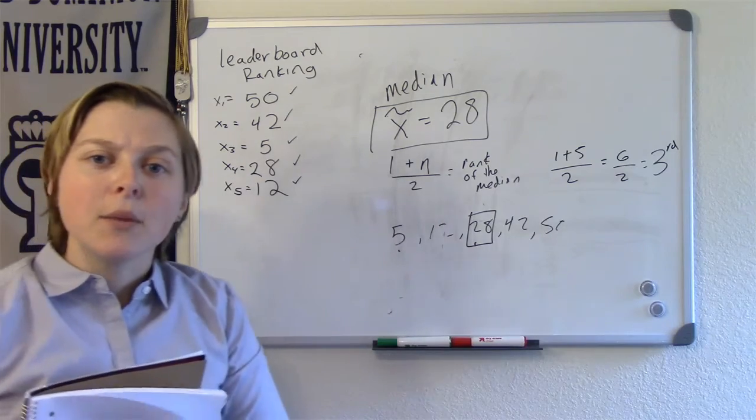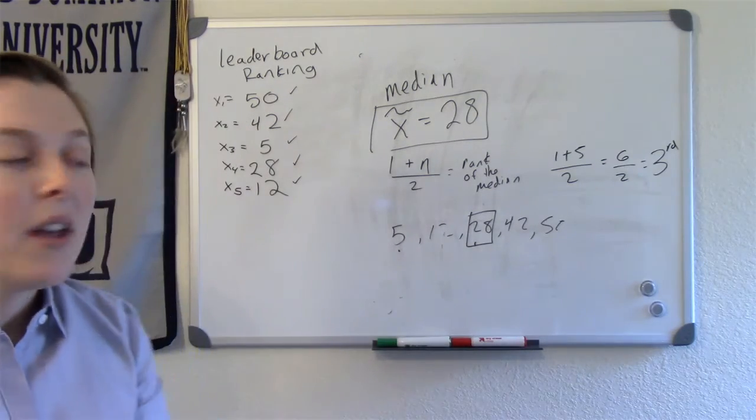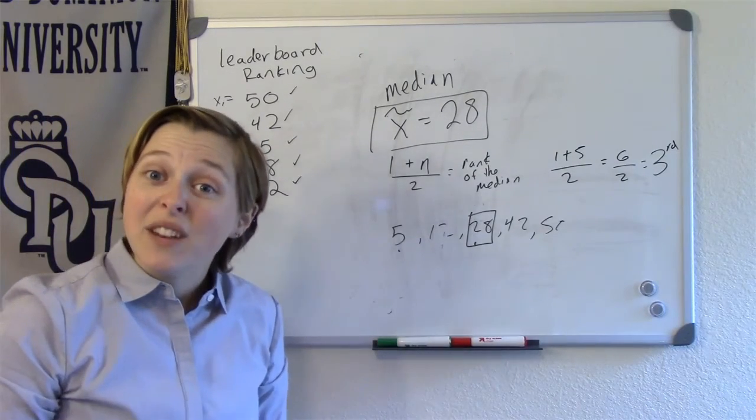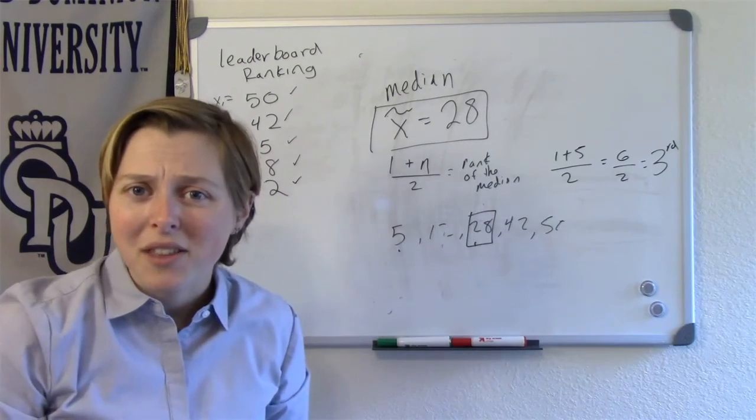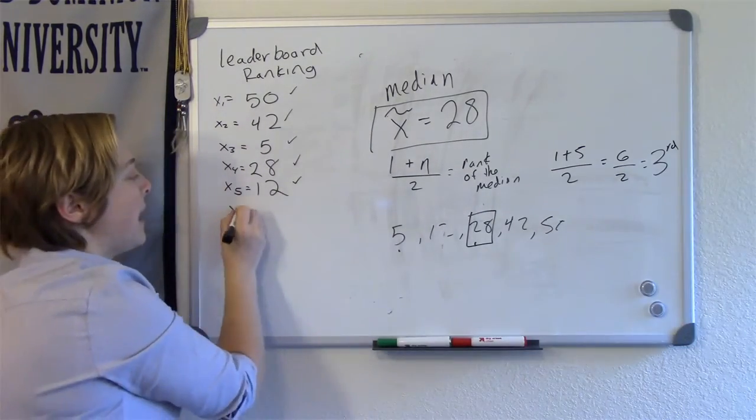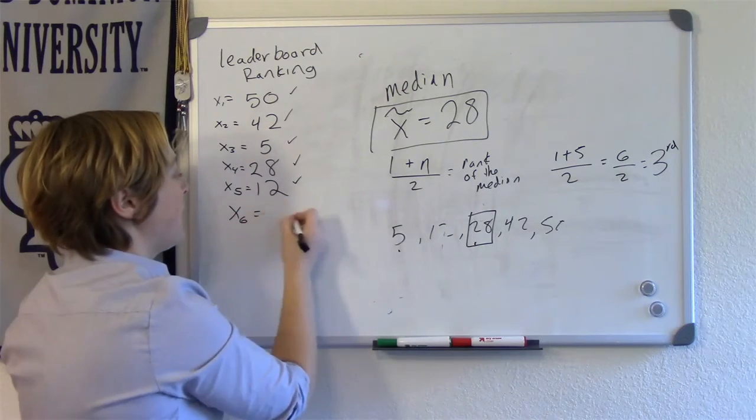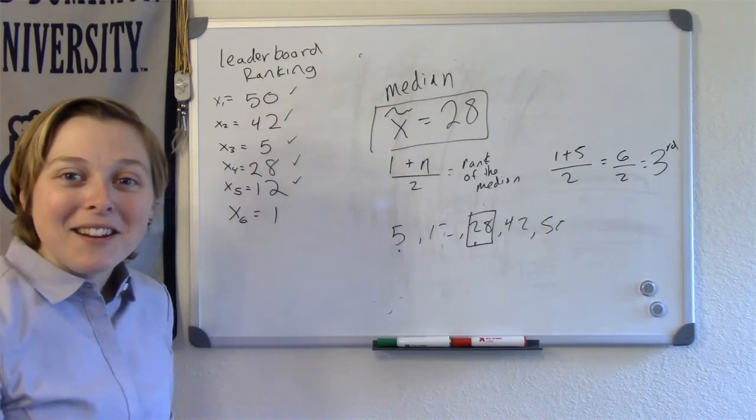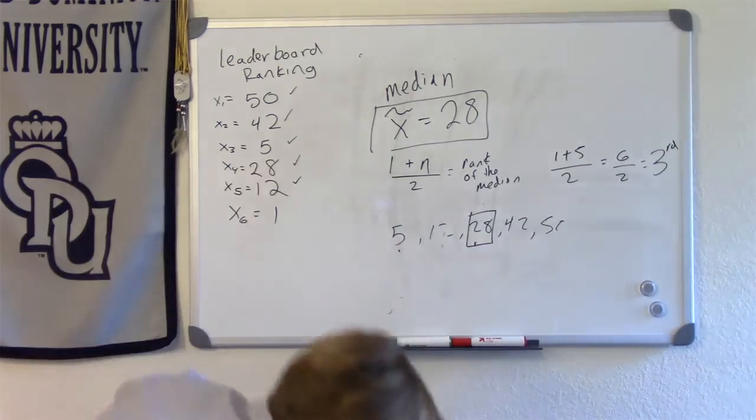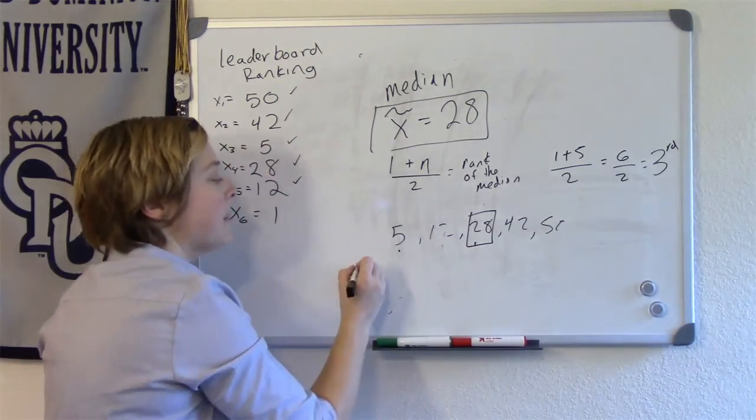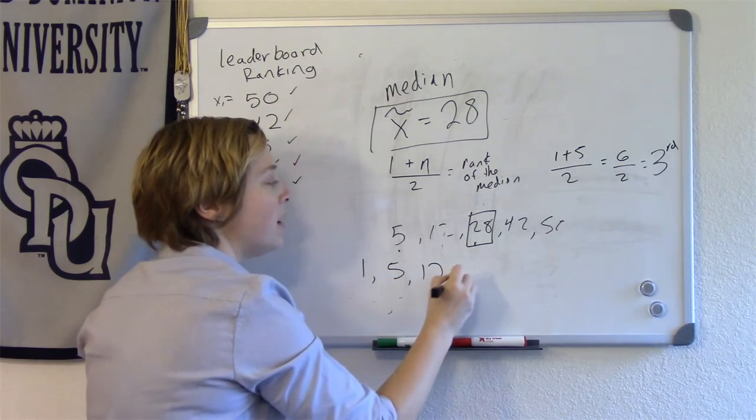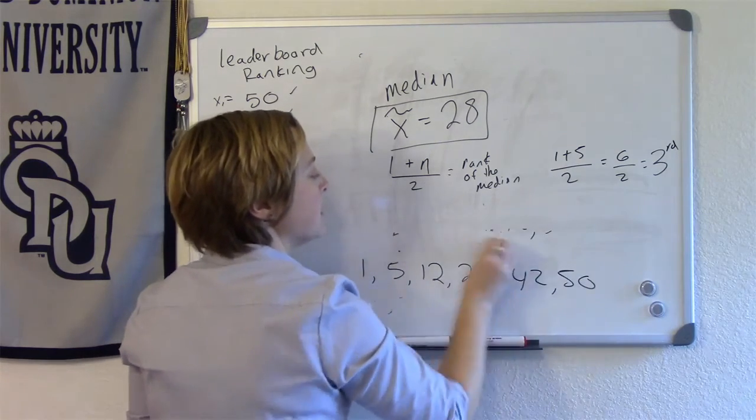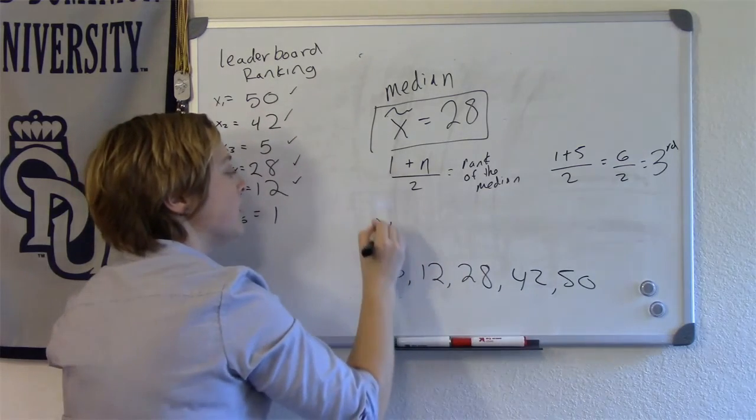Now, I want to propose that we have another observation, because if you have an odd number of observations in your sample, finding the median is kind of easy. If you have an even number of observations in your sample, there's one more thing that you need to do. So let's pretend like we have a 6th observation here, and say I was ranked number 1. So let me go ahead and re-sort my data. I have 1, 5, 12, 28, 42, and 50.